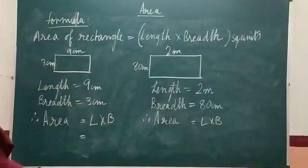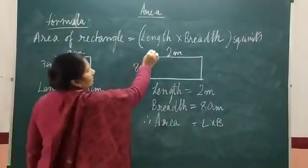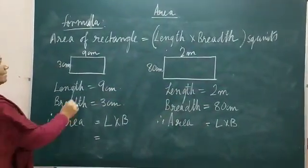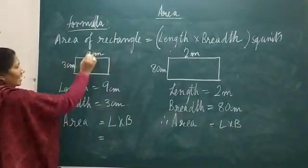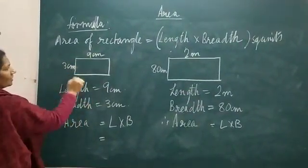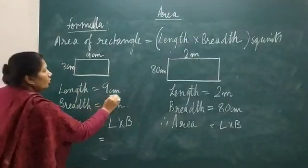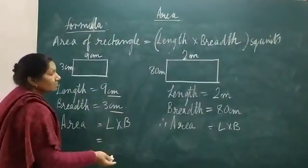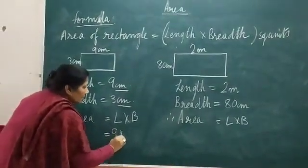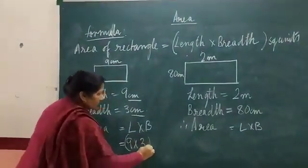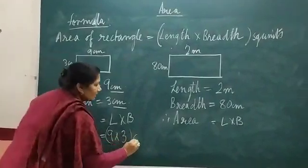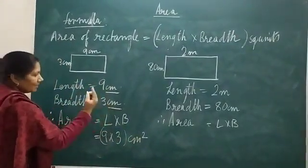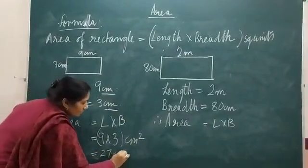Now, area of a rectangle is equal to length multiplied by breadth, in square units. Let us take an example: length is 9 centimeters, breadth is 3 centimeters. Units are the same. So area equals 9 into 3 centimeter square, which is equal to 27 centimeter square.